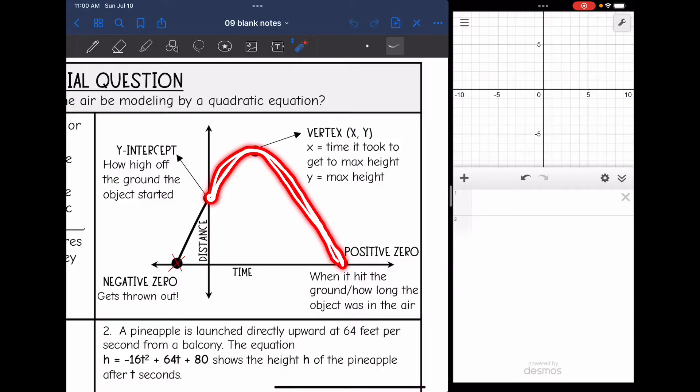This is just the height that's modeled. This is not the exact path that the object is taking. This is just the modeled height of it.